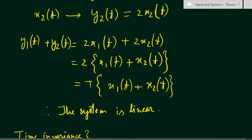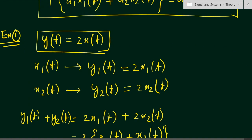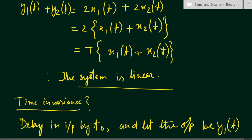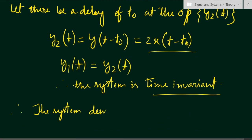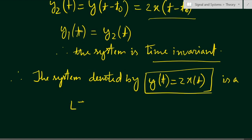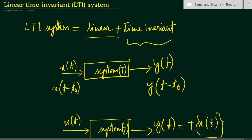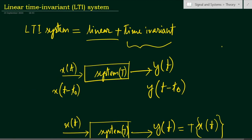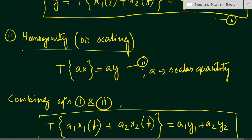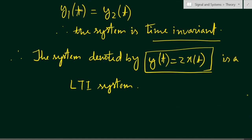So for this given system y(t) = 2x(t), the system follows the linearity property — that is, the system is linear — as well as it is time invariant. Therefore, we can say that the system y(t) = 2x(t) is an LTI system, or linear time invariant system. To summarize: an LTI system must follow superposition (additivity and homogeneity) and time invariance, where the same delay in input causes the same delay in output.